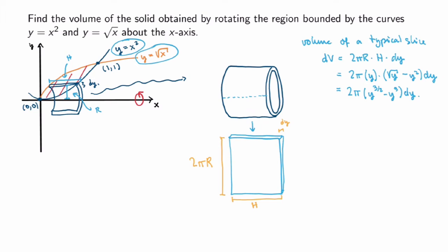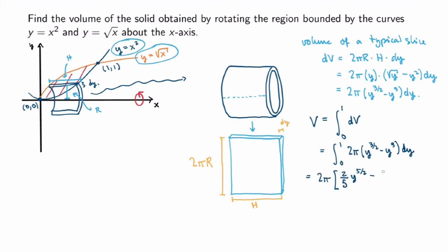The last step is to sum over all slices, which means integrating dv. The limits of integration are in y, from the lowest to the highest y-coordinate of the solid. From the previous video, the curves intersect at (1, 1), so we integrate from y = 0 to y = 1. This gives the integral from 0 to 1 of 2π(y^(3/2) − y³) dy. Evaluating: the integral of y^(3/2) is (2/5)y^(5/2) and the integral of y³ is (1/4)y⁴, evaluated between 0 and 1.